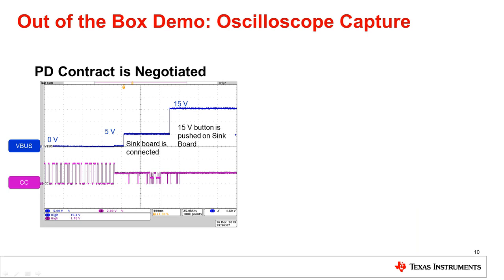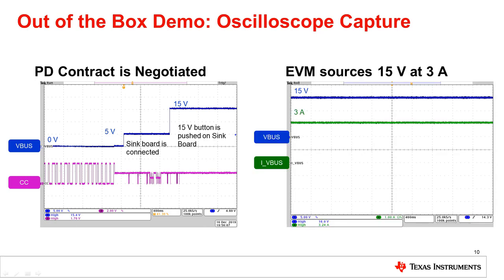Taking a closer look at the scope captures, we can see that the CC line is toggling to show that the EVM can source or sink. When the sink board is connected, it shows only the 5 volt PDO, so the EVM sources 5 volts. When the 15 volt contract button is pushed on the sink board, the VBUS output voltage jumps from 5 volts to 15 volts. The EVM is now sourcing 15 volts at 3 amps.